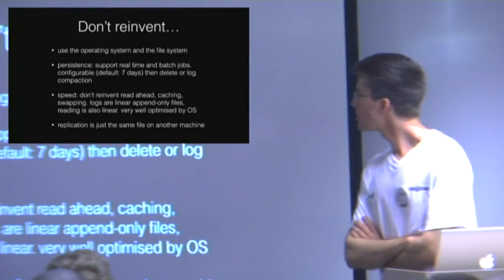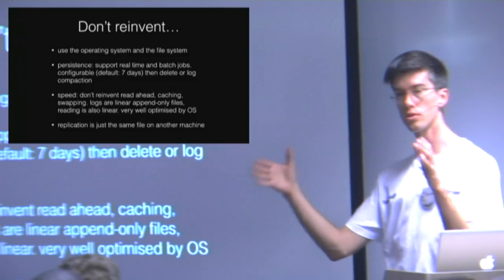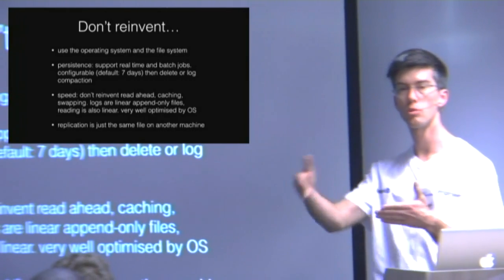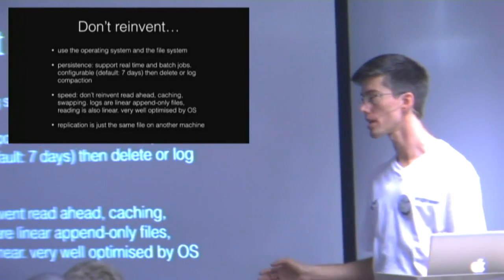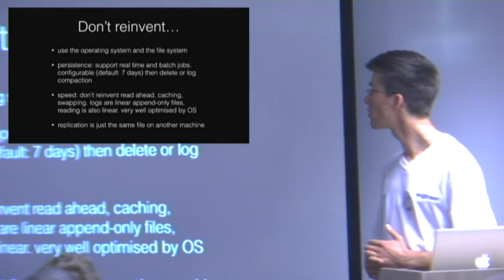Kafka is really fast — 800 billion messages a day, 11 million a second on a cluster of about 50 nodes. It uses what the operating system and file system provide. It doesn't try to reinvent things like whether to batch events in memory before writing to disk, or whether to read ahead for a consumer. It just leaves that up to the operating system, because that's what operating systems do and have been doing for a very long time.